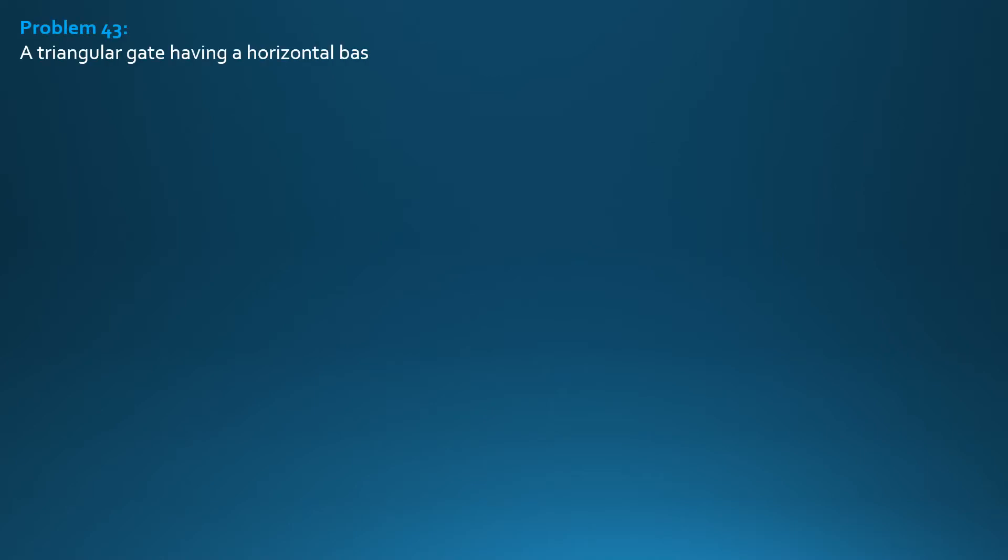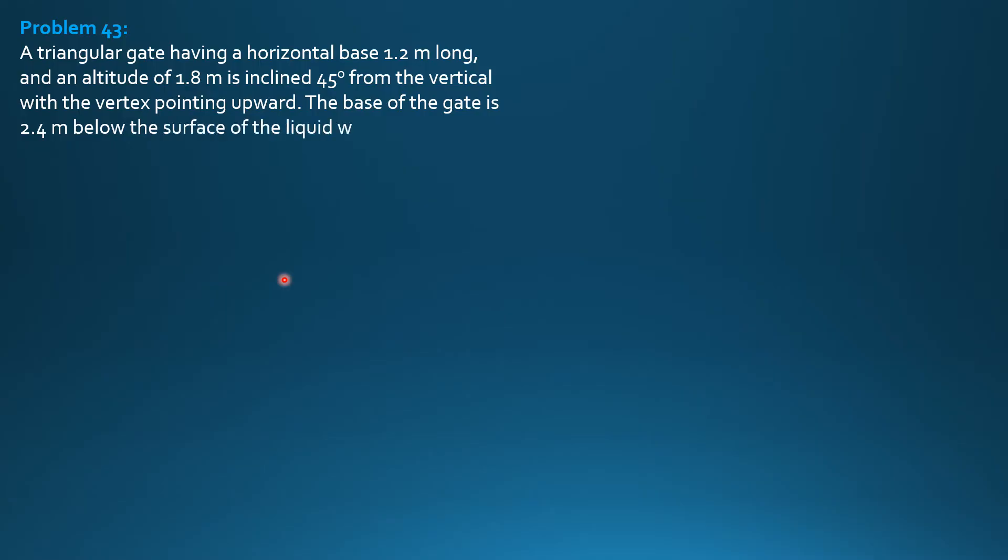A triangular gate having a horizontal base 1.2 meters long and an altitude of 1.8 meters is inclined 45 degrees from the vertical with the vertex pointing upward. The base of the gate is 2.4 meters below the surface of the liquid, which has a specific gravity of 0.82. What normal force must be applied at the vertex of the gate to open it?